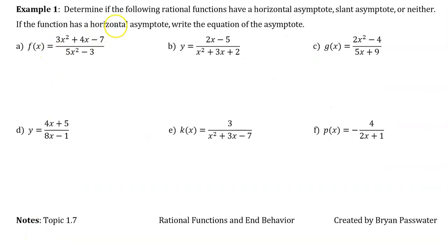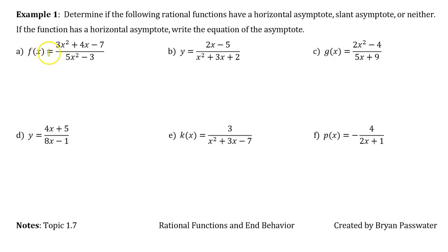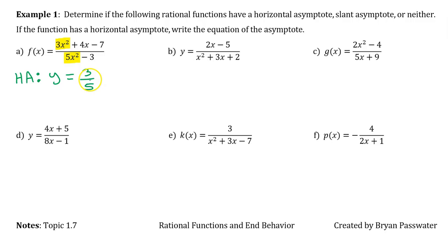Example 1: determine if the following rational functions have a horizontal asymptote, slant asymptote, or neither. If the function has a horizontal asymptote, write the equation of the asymptote. For part a, the degree of the numerator and denominator are the same. This gives us a horizontal asymptote of y equals 3/5, because the x squared terms cancel out.